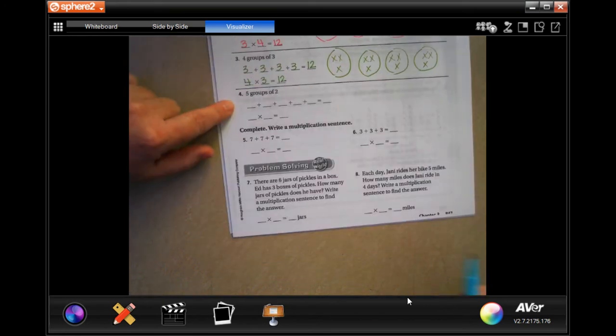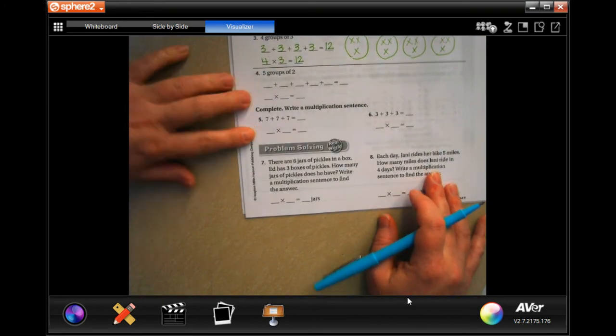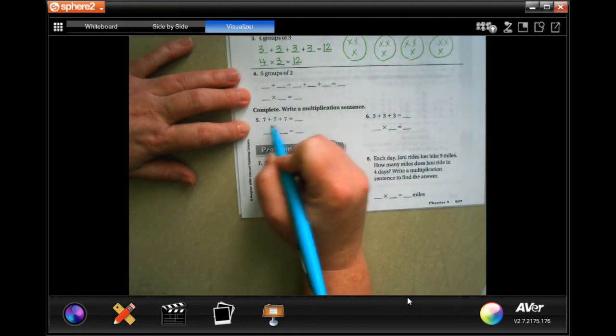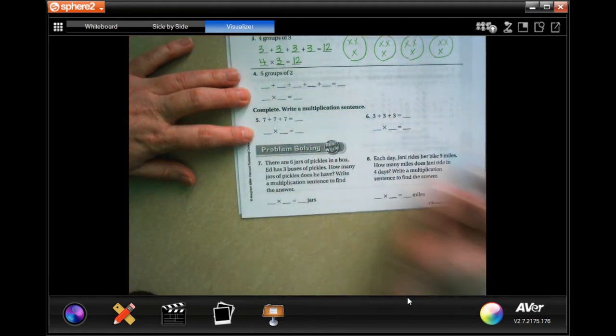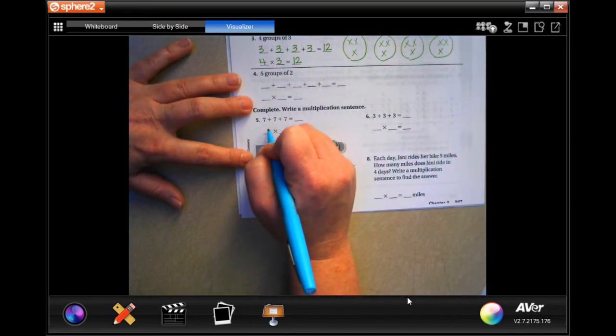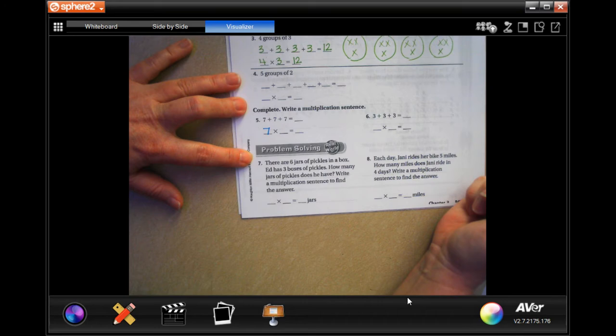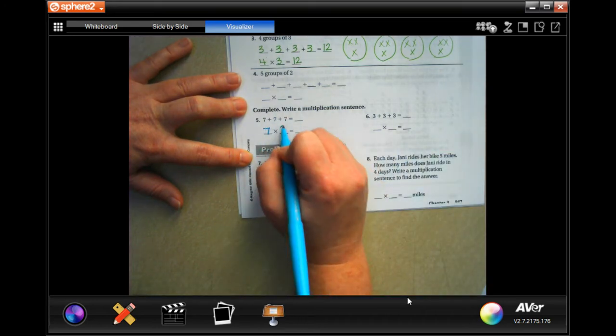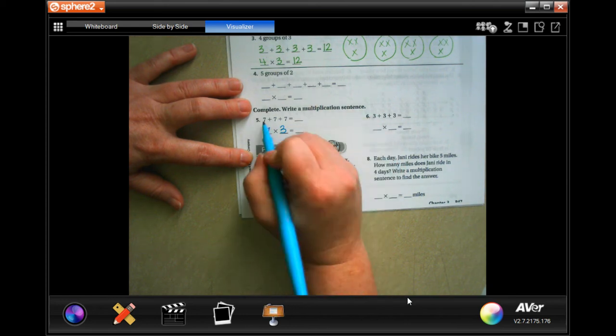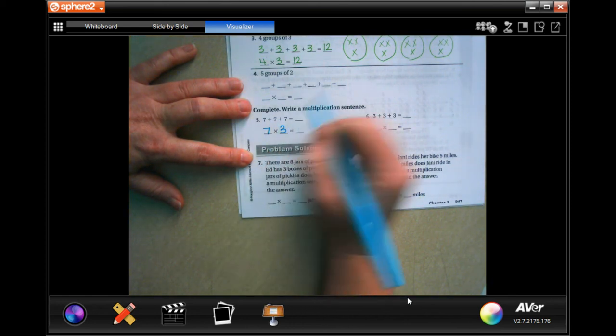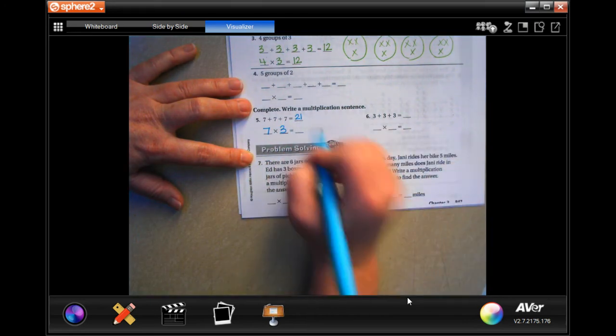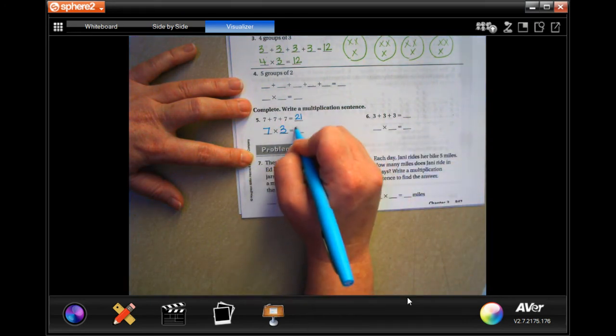You guys are going to go ahead and do number four. We are going to complete the addition problem and then write a multiplication sentence. So seven plus seven plus seven. Well, we know that one of those numbers is going to be seven, and we know that there are one, two, three sets of seven. So seven times three. Well, seven plus seven is 14, plus seven is 21. So that means that seven times three is 21.